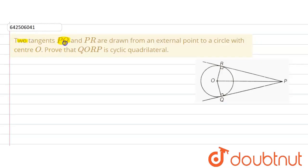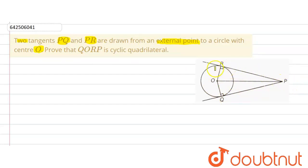The given question says that two tangents PQ and PR are drawn from an external point to a circle with center O. So P is the external point from which PQ and PR are two tangents drawn to the circle with center O.